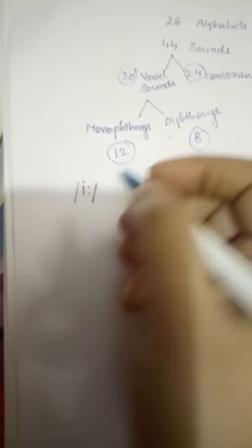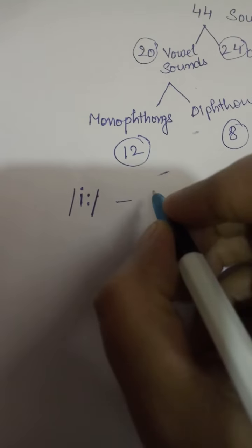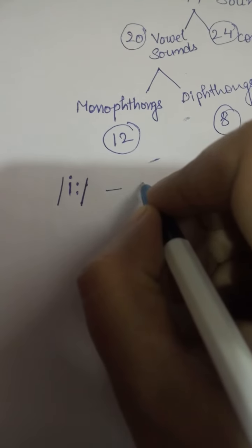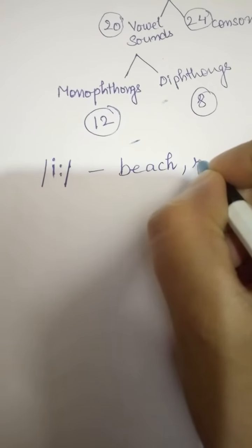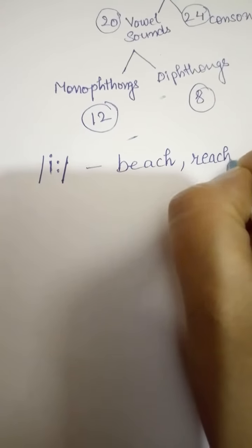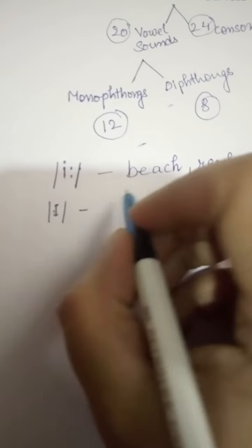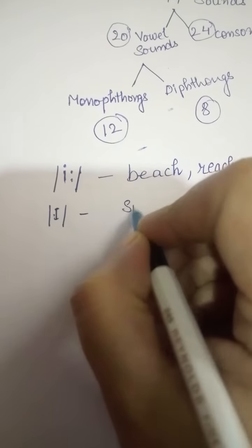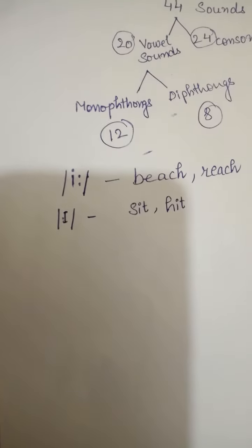The first monophthong is the long 'ee' sound, as in 'beach' and 'reach.' The second monophthong is the short 'i' sound, as in 'sit,' 'hit,' and 'pit.'